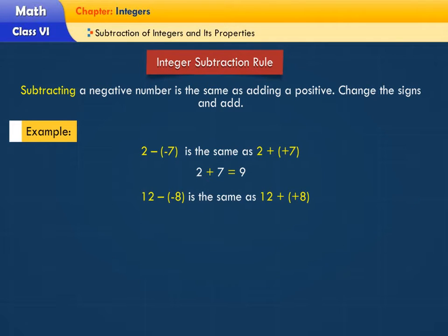12 minus minus 8 is the same as 12 plus plus 8. 12 plus 8 is equal to 20.